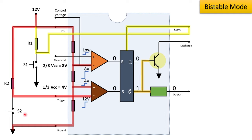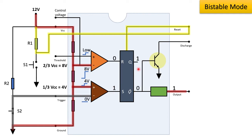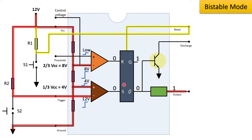When we push switch S2, it results in a change of state of the trigger comparator and the output becomes 1. This changes the flip-flop condition and the output changes from 1 to 0 at Q-bar, causing the IC555 output to go high or 1. The output stays in the same state until we push switch S1. When we open switch S2, the IC remains in the same condition because both inputs of the flip-flop become 0 and no change occurs.